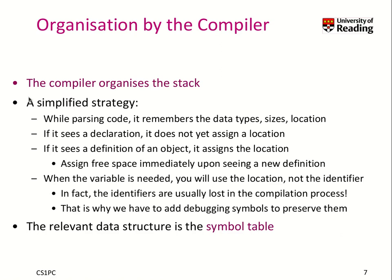The compiler is in charge of organizing our stack frames, so every function that is compiled needs to define the layout and where to place local variables onto the stack. A simplified strategy is as follows: when you parse the code, you remember the data type of the variable, how big it is, and its location in memory. If you see a declaration, you don't have to assign a location — it just tells you a variable has a certain type. But once you see a definition, you assign a location in memory, relative to your stack frame, using the stack base pointer.